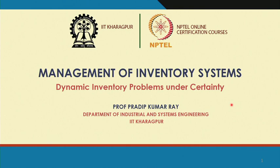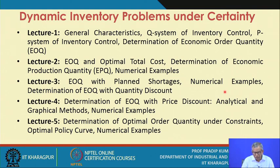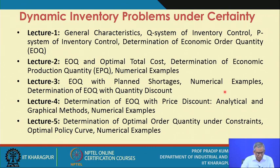During the fifth week of our lecture sessions on the management of inventory systems, we are going to discuss the important topic called dynamic inventory problems under certainty. As we have already mentioned, inventory problems are essentially classified under four categories, and one important category is dynamic inventory problem under certainty. During this week, we are going to discuss several important aspects related to this problem, particularly the specific topics lecture-wise.